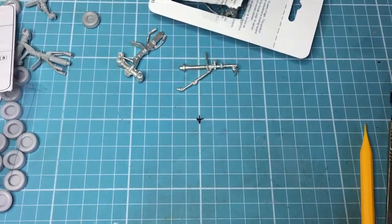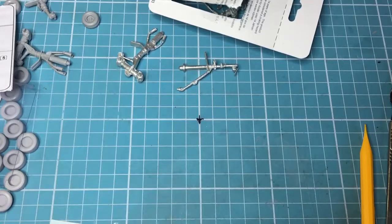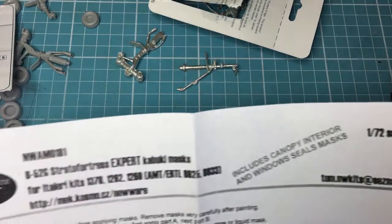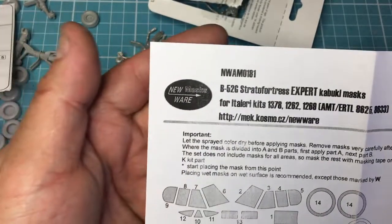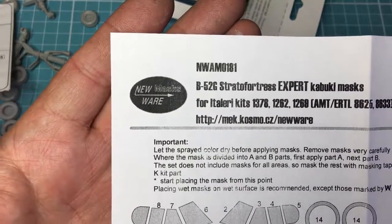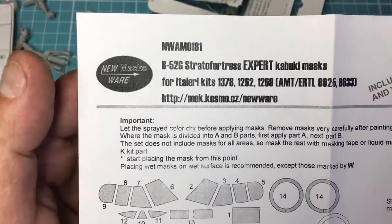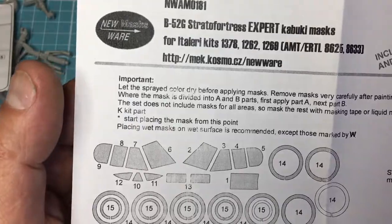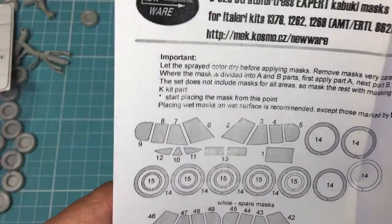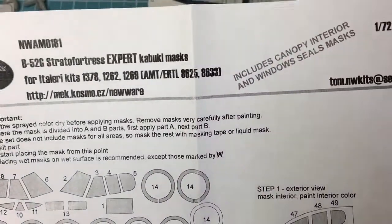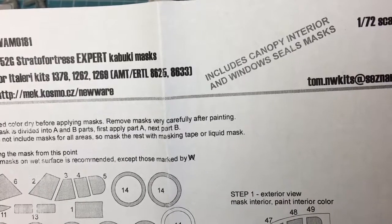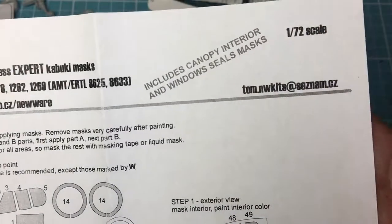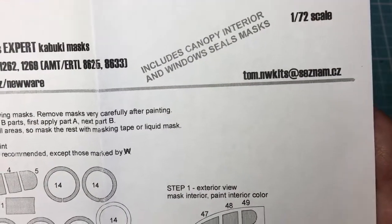One final little bit which came which I ordered as well, which isn't Vulcan related - this is B-52 related. I've got some masks from a company called New Wear. I've never heard of these before, even though I have ordered their masks for the B-2. I've had to order them from the States because Hannants were sold out. This set here says includes canopy interior and window seals mask.